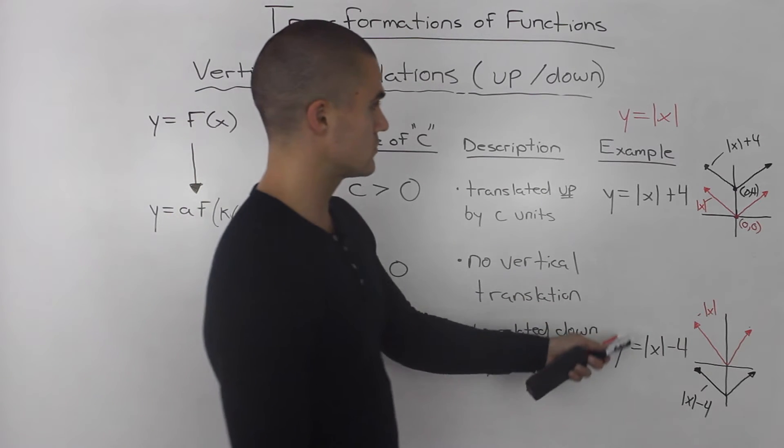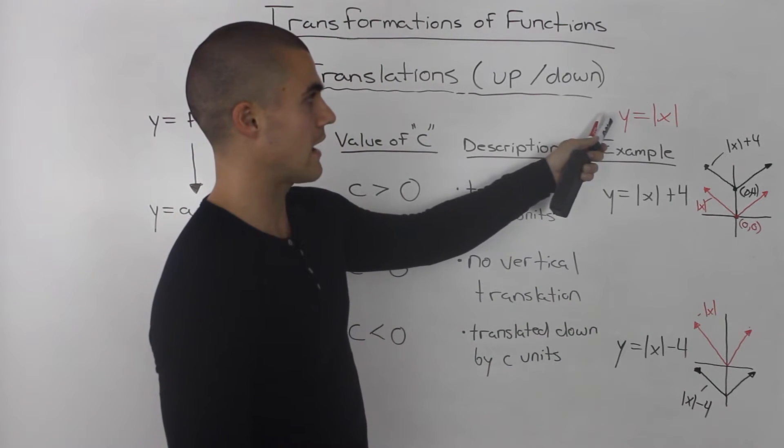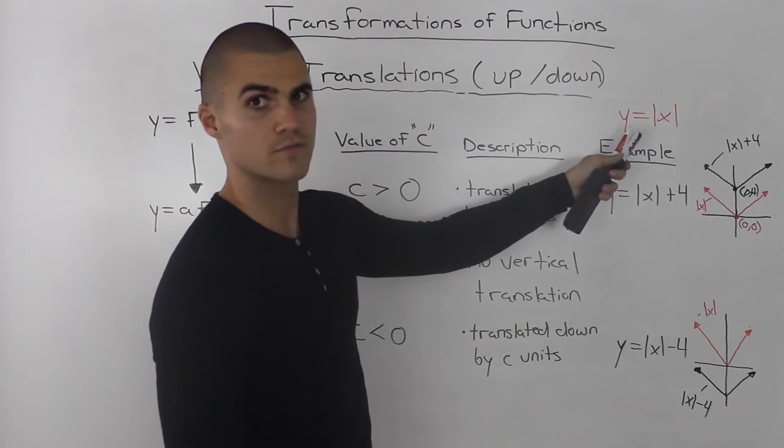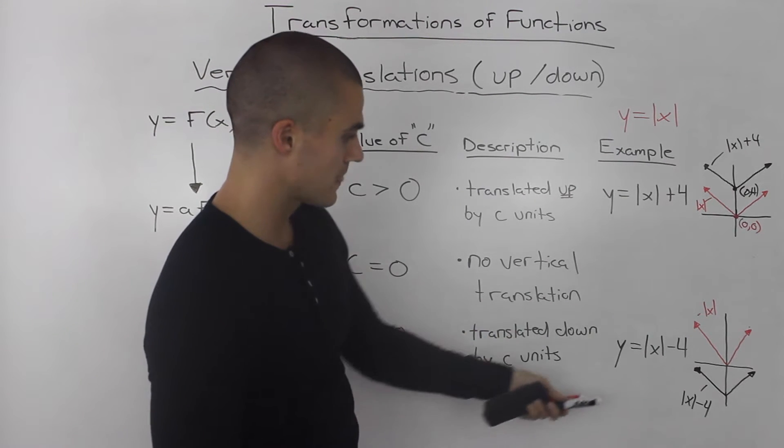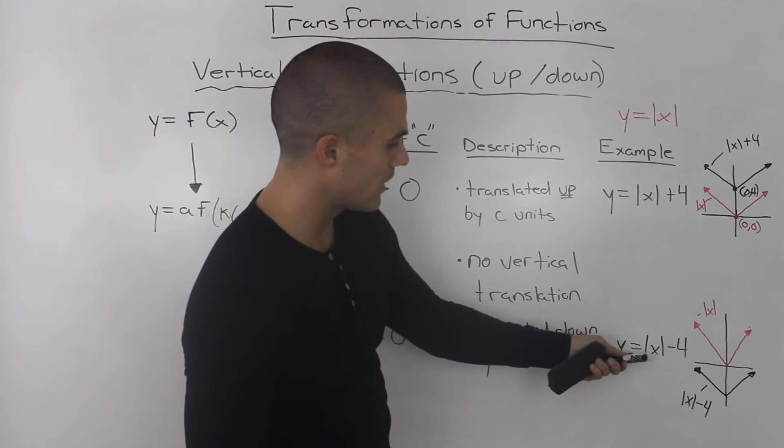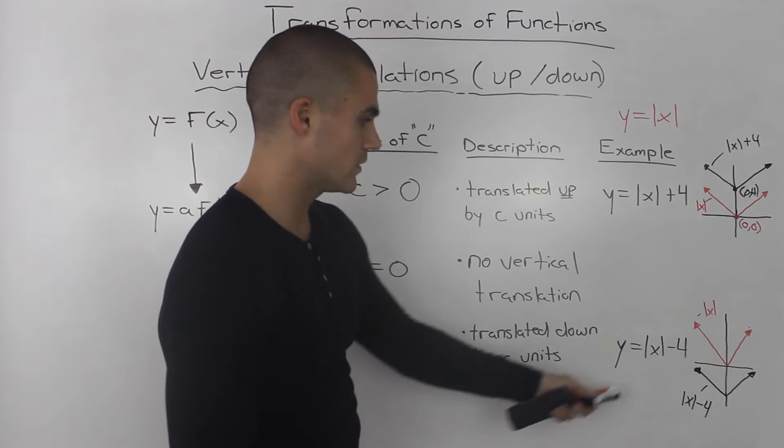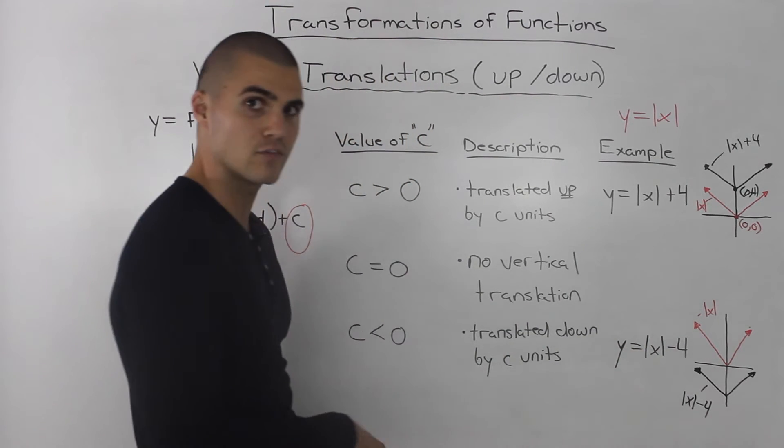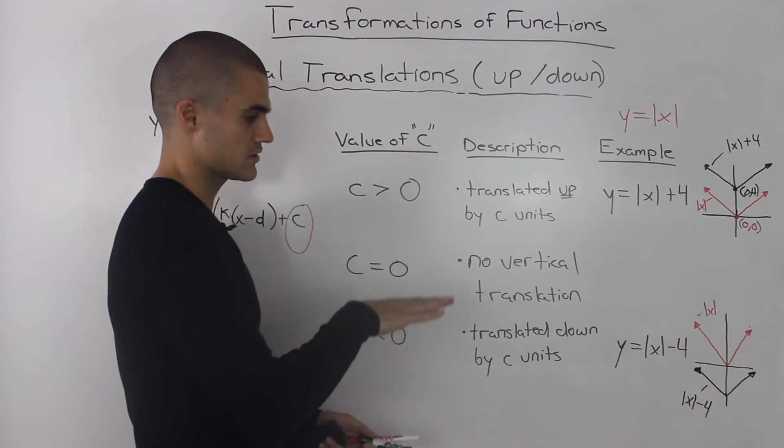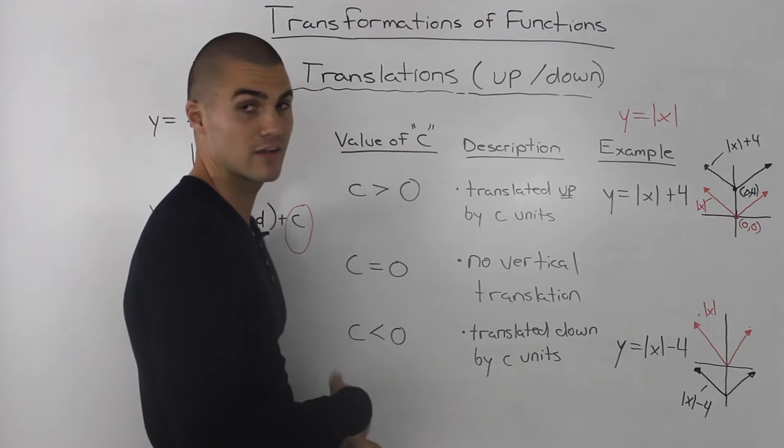Going back to our example, we take our parent function, the absolute value of X, and transform it to Y equals the absolute value of X minus 4. This means the C value is negative 4, so the function gets translated down by 4 units.